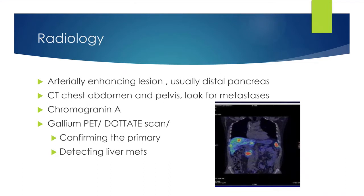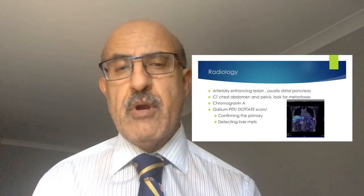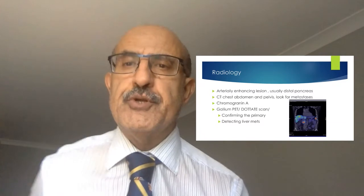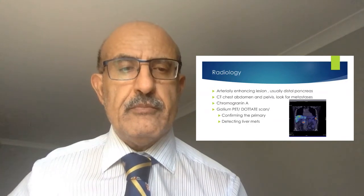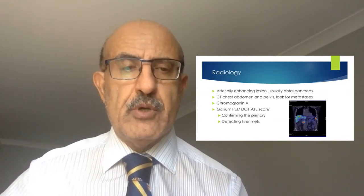Neuroendocrine tumors of the pancreas have a sister group — neuroendocrine tumors of the rest of the gastrointestinal tract, most commonly arising in the terminal ileum and appendix. From a pathologic point of view these tumors are more or less similar; they are categorized, staged, and treated in a similar manner. Those in the intestine are called carcinoid tumors — a name coined because they look like cancer but sometimes do not metastasize.